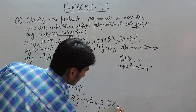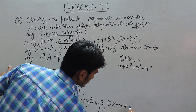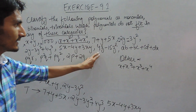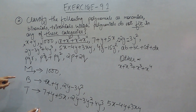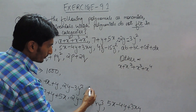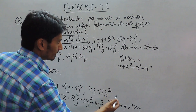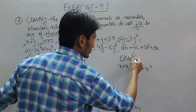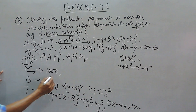This is 5x minus 4y plus 3xy. Again, this is having two terms, so this comes in the category binomial. This is 4z minus 15z². This term has one, two, three, four terms, so this should come in the other category. And this expression is having only one term, so this should be monomial.